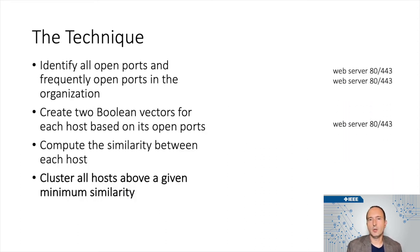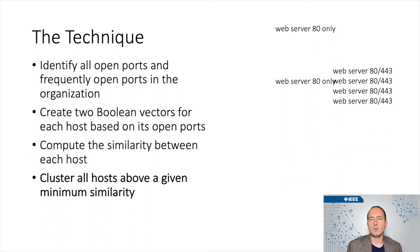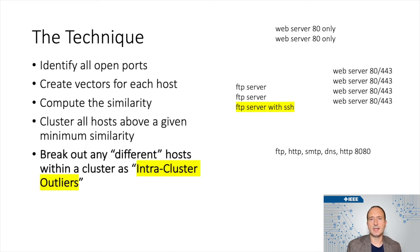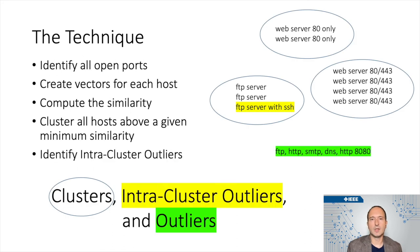Then you cluster all the hosts that are above a given minimum similarity. We used 90% — 0.90 — in this exercise. And you get a really cool listing and grouping of servers. Then we take a look at each of these clusters, and anything that is not exactly like the others in the cluster is marked as an intra-cluster outlier. This means it was close enough to be clustered, but there's something different about it and we need to pay attention or we might miss something. So in the end, you have three groups: the clusters, the intra-cluster outliers that are just a little bit different, and the true outliers that just couldn't be clustered. With all that, you have a great picture of the attack surface.